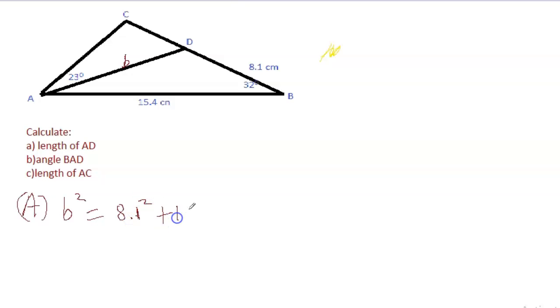Minus 2 times 8.1 times the same two sides, 15.4, cos of the angle. The angle formed by these two sides is actually the opposite angle to the side you started out with, so cos 32.